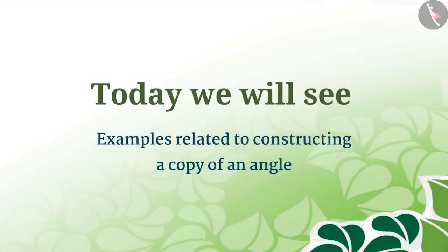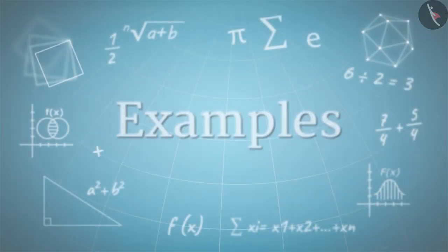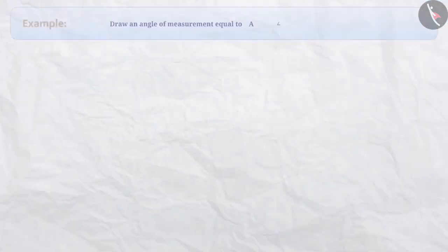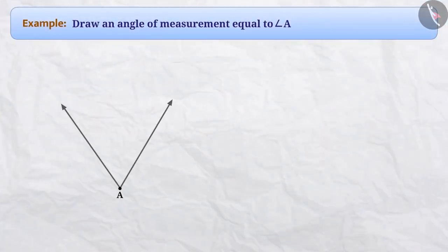Today, we will see examples of constructing angles equal to a given angle. Draw an angle of measurement equal to angle A. Here, we are given angle A whose measurement we do not know, and we have to construct an angle of measurement equal to this angle.